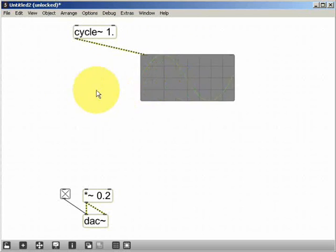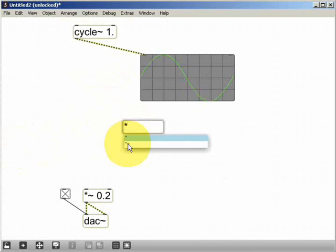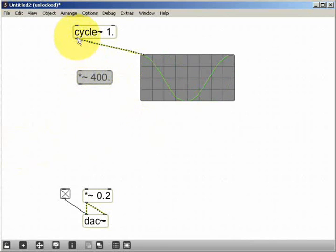If I now take the signal that's being generated by that cycle object and multiply it by 400, that's going to give me a sine wave with a maximum sample value of 400 and a minimum value of minus 400.